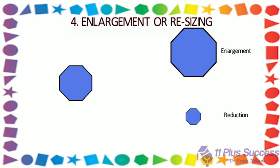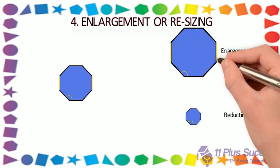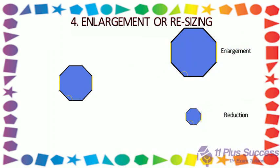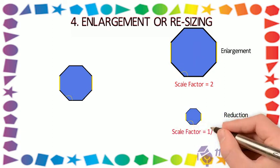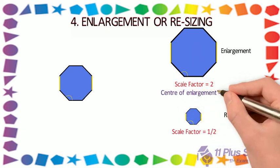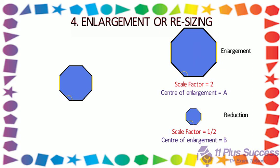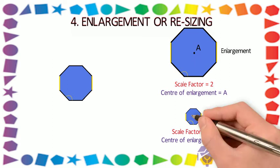Rules: 1. All angles stay the same. 2. Relative sizes are the same — for example, the face and body are still in proportion. 3. Enlargement is described by its scale factor, and the position is described by the center of enlargement. 4. The position of the enlarged shape is described by the center of enlargement.